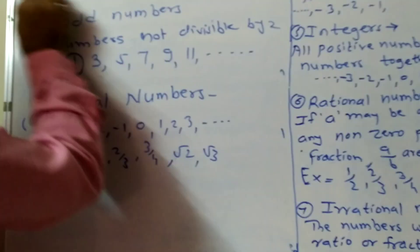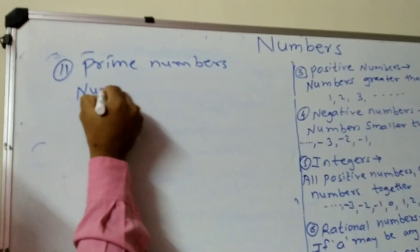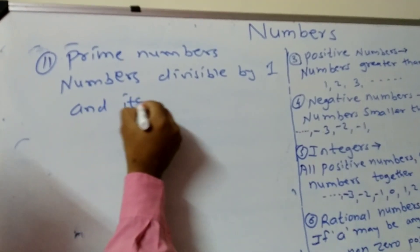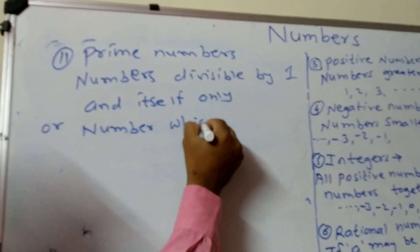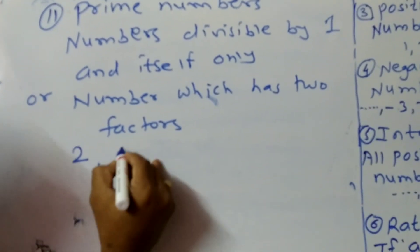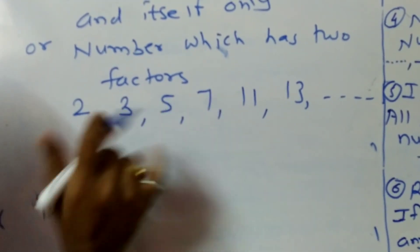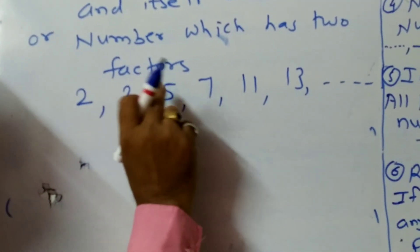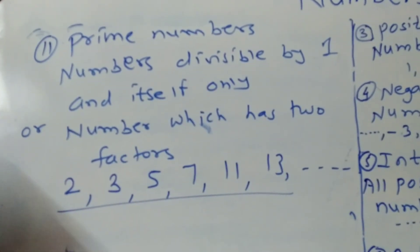The next type is prime numbers. Numbers divisible by 1 and itself only are called prime numbers, or numbers which have exactly two factors. For example: 2, 3, 5, 7, 11, 13, and so on. 2 is divisible by 1 and 2 only; 3 is divisible by 1 and 3 only; 5 is divisible by 1 and 5 only. Therefore, the smallest prime number is 2 and the largest prime number cannot be defined.